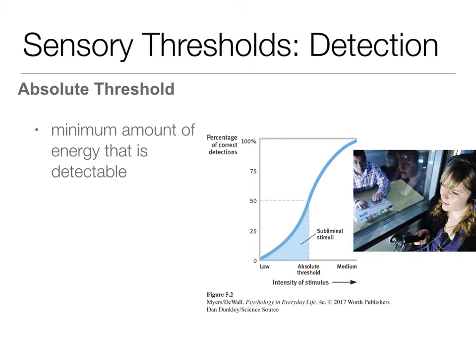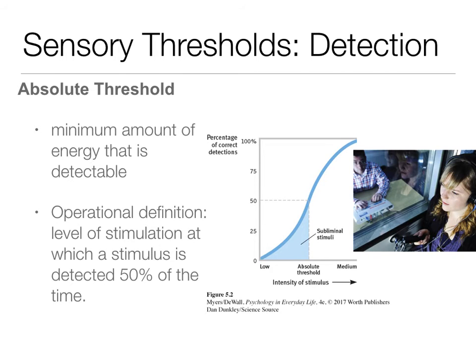Remember, neurons are all or none. So if we don't have enough stimulation to get to 'all,' we're going to be at 'none.' Our operational definition for absolute threshold is the level required for us to detect that stimulation 50% of the time.